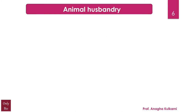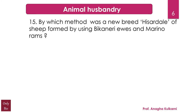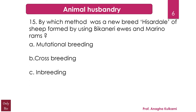The next question relates with animal husbandry: by which method was the new breed Hizardale of sheep formed using Bikaneri ewes and Merino rams? Options: A) mutational breeding, B) cross breeding, C) inbreeding, D) outcrossing. The correct answer is cross breeding. Mutational breeding, sometimes called variation breeding, involves exposing seeds to chemicals or radiation to generate mutants with desirable traits. Cross breeding is the process of breeding to create offspring sharing traits of both parent lineages, producing hybrid vigor.